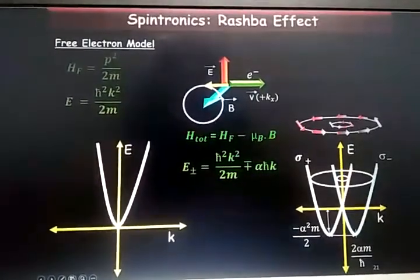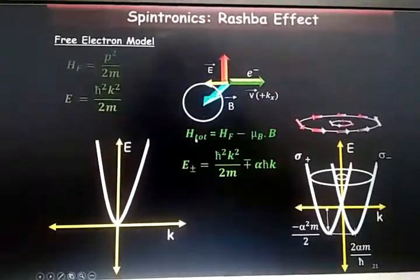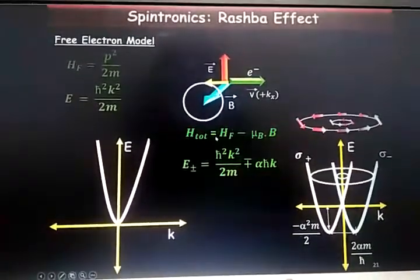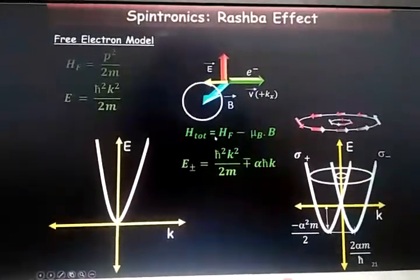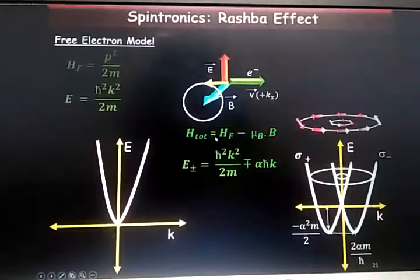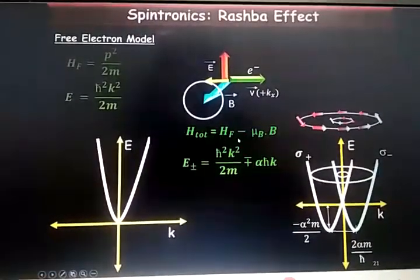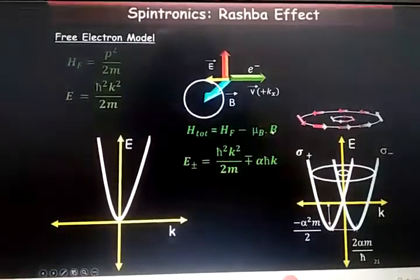What will be the Hamiltonian? The Hamiltonian of this system will be nothing but the Hamiltonian of a free electron minus μB·B, the magnetic energy term.